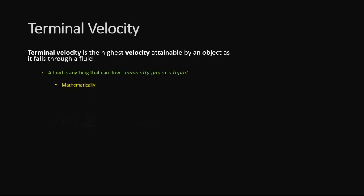Mathematically, terminal velocity can be written as Vt = √(2Fg/CρA). The unit of terminal velocity is simply the unit of velocity, which is meter per second.